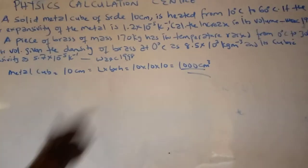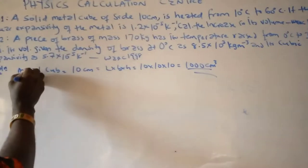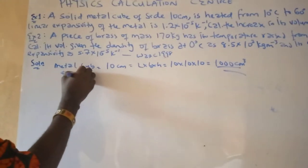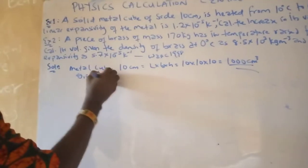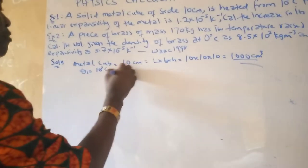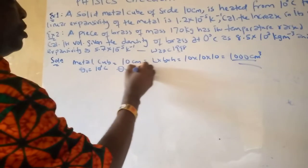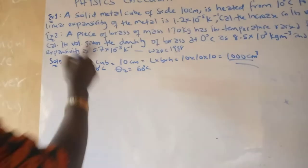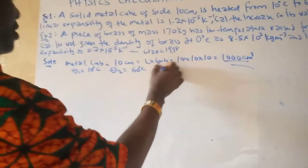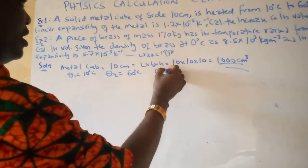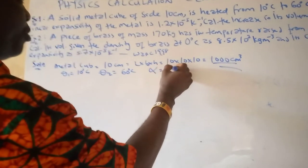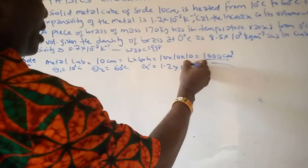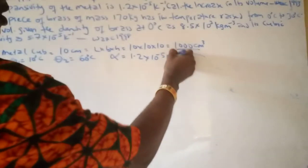That is V₁. We have the initial temperature to be 10 degrees centigrade, and the final temperature to be 60 degrees centigrade. It says the linear expansivity is 1.2 × 10⁻⁵ per Kelvin.